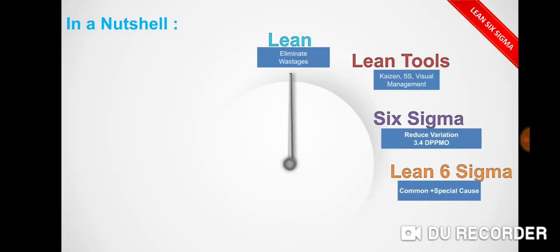In a nutshell, I would like to conclude by saying: Lean focuses on eliminating the wastages, and Lean tools include VSM, Kaizen, FIAS, visual management. And Six Sigma is to reduce the variation to 3.4 defects per million opportunity. Lean and Six Sigma both come together: Lean can take care of the common causes, and Six Sigma where there are special causes, where we can use the statistical approach to solve the problems.